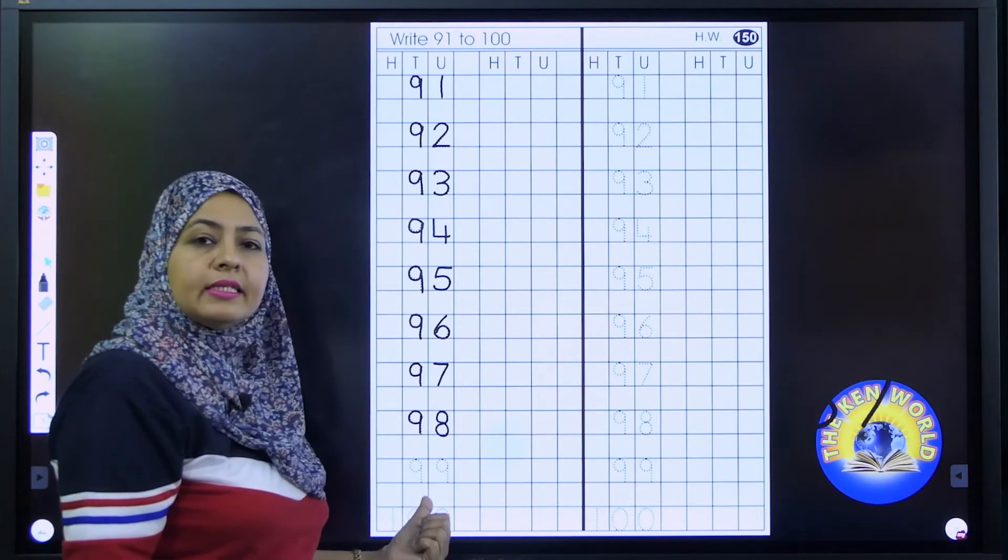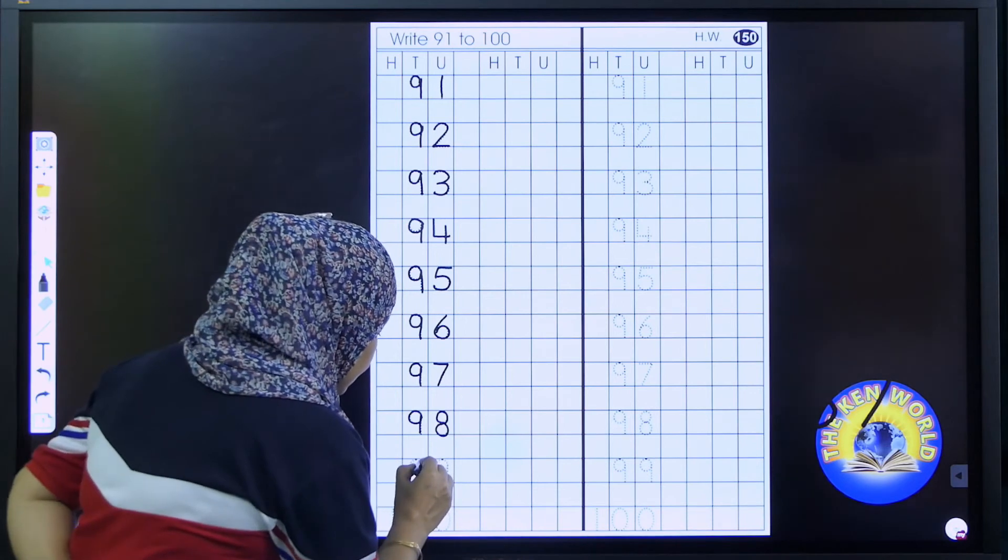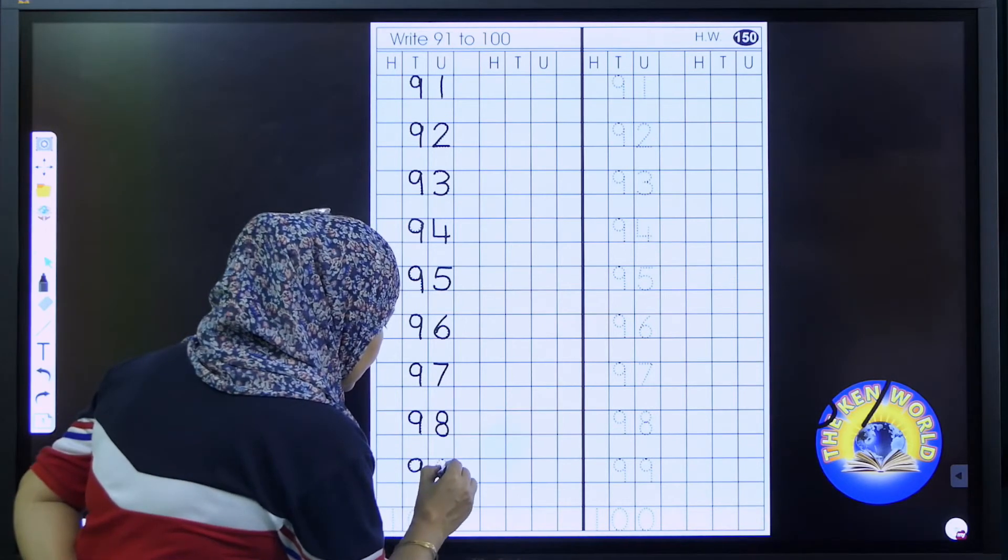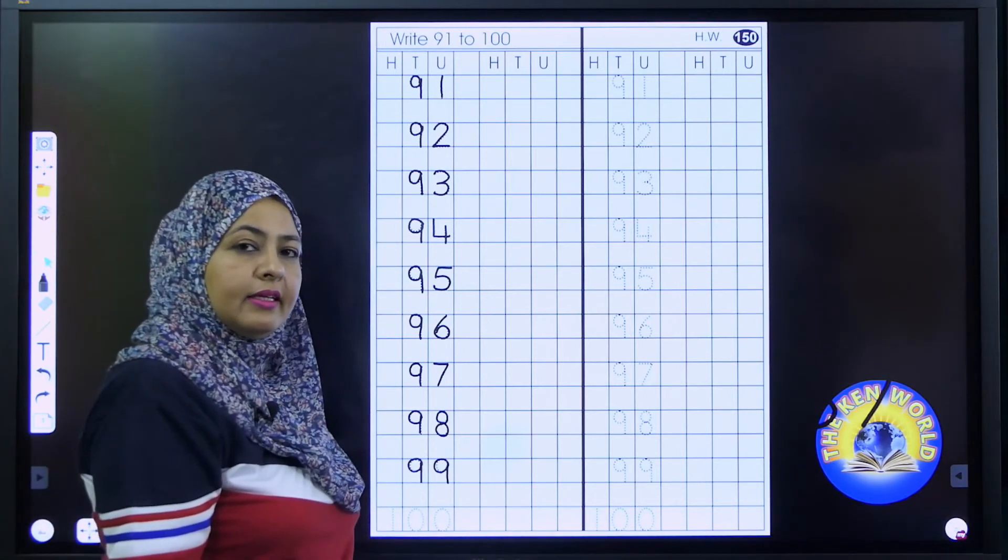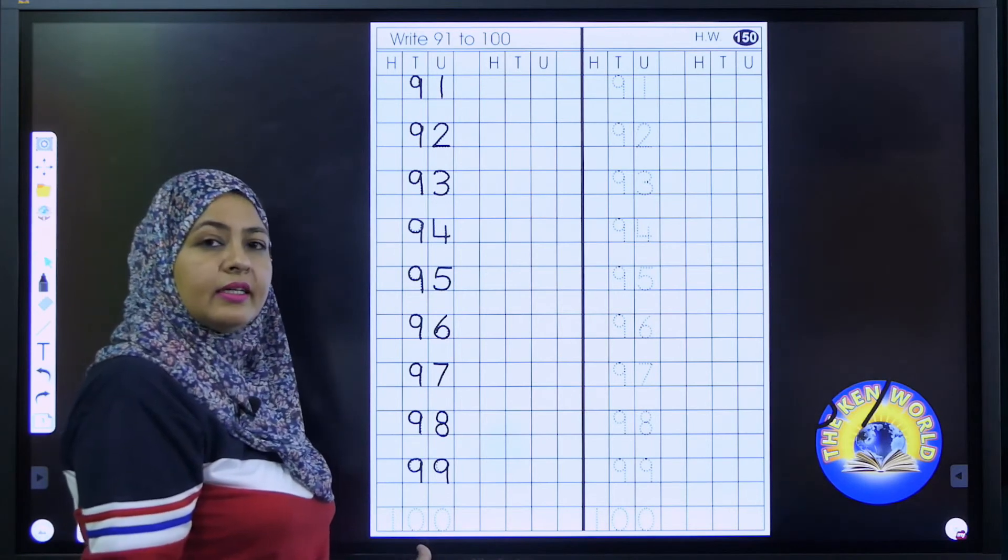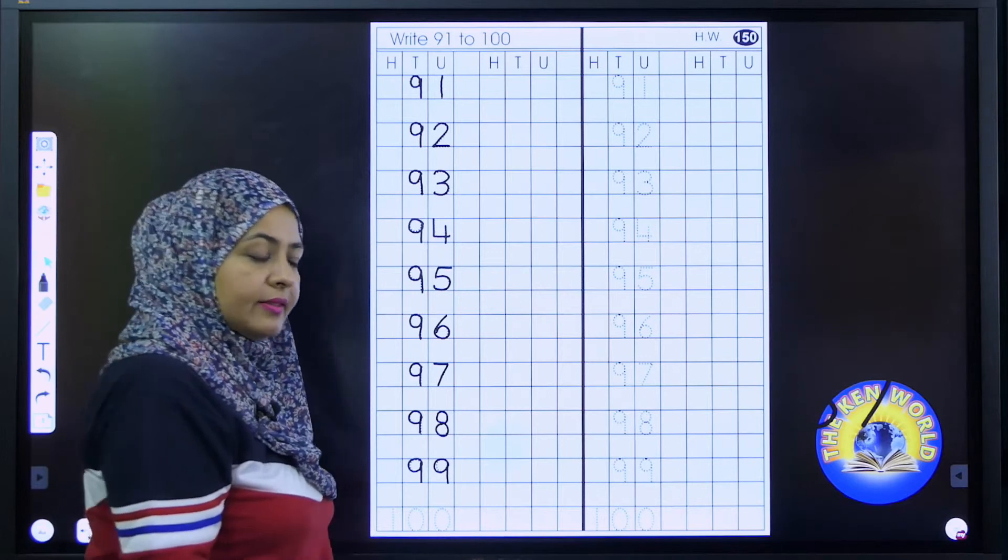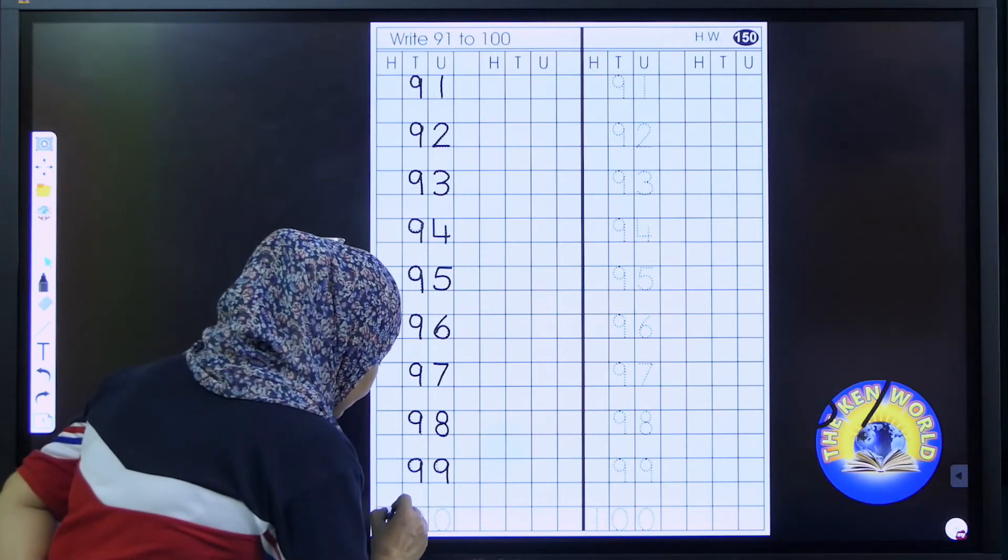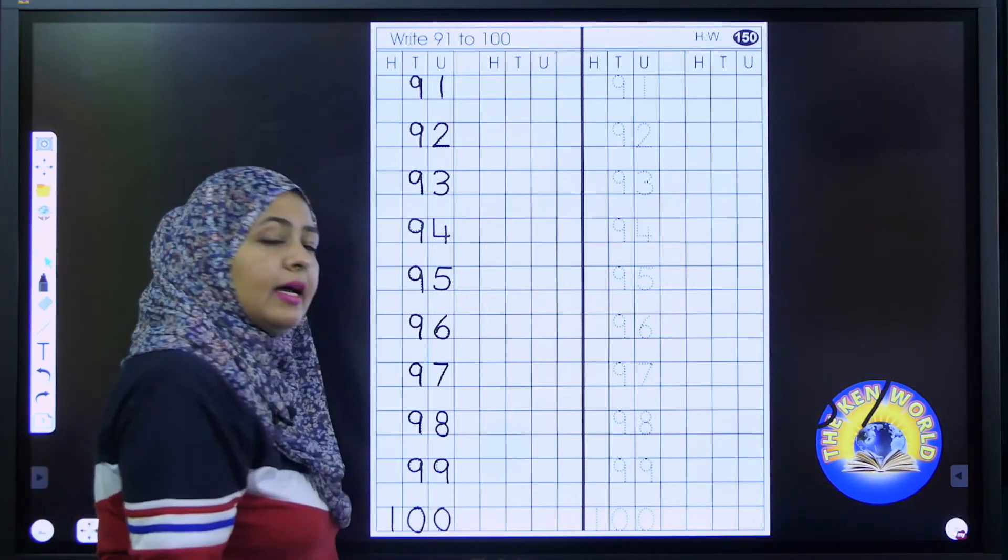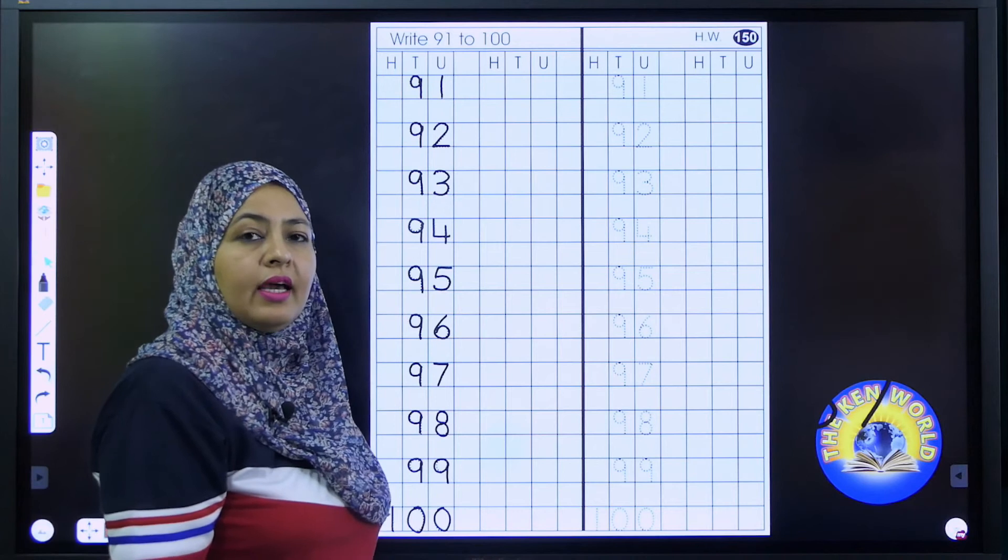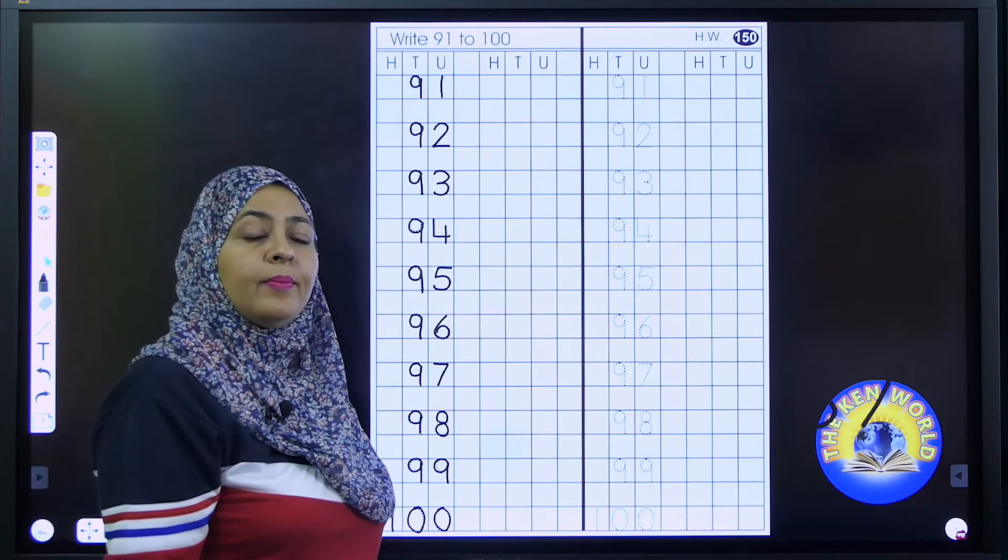Here you can see the next number is 99. 99, 99. And the last one is 100. 1, 0, 0, 100. We have traced them. Now we will write without dots. Complete it fast.